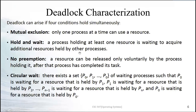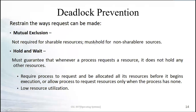The hold-and-wait rule says a process holding at least one resource is waiting to acquire additional resources. The new prevention rule requires that whenever a process requests a resource, it must not be holding any other resources. All required resources must be available at the same time before allocation. For example, if a program needs mouse, keyboard, and monitor, all three must be free before any are allocated.